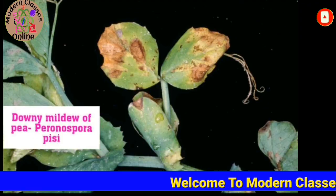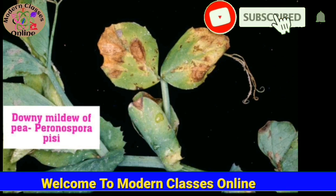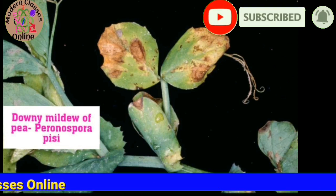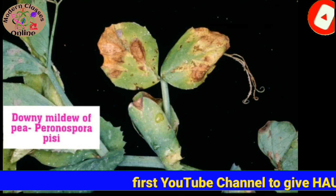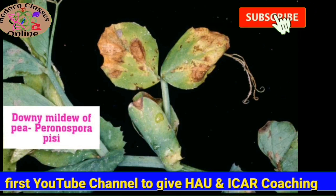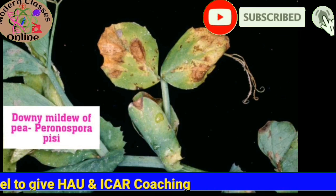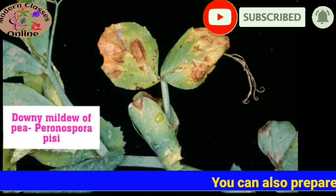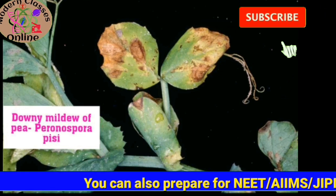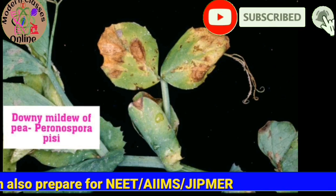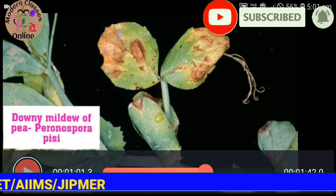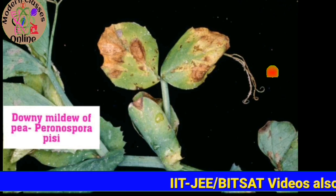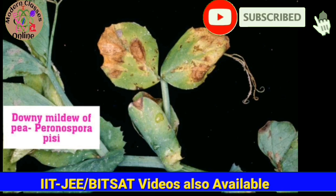Downy mildew of pea — not powdery mildew but downy mildew of pea. The causative agent is Peronospora pisi. This is downy mildew of pea.